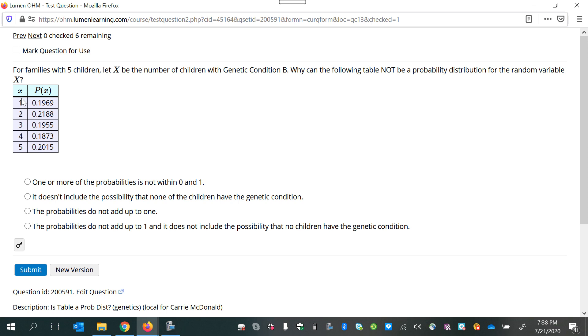Now, looking at it, my first instinct is: what if there were no children out of all five children that the couple had? What if all five children were healthy? What if none of the five children had the genetic condition? So we should see an X value of zero to represent the possibility of none of the children. So for that reason alone, it's not a probability distribution. So you might choose, it doesn't include the possibility that none of the children have the genetic condition.